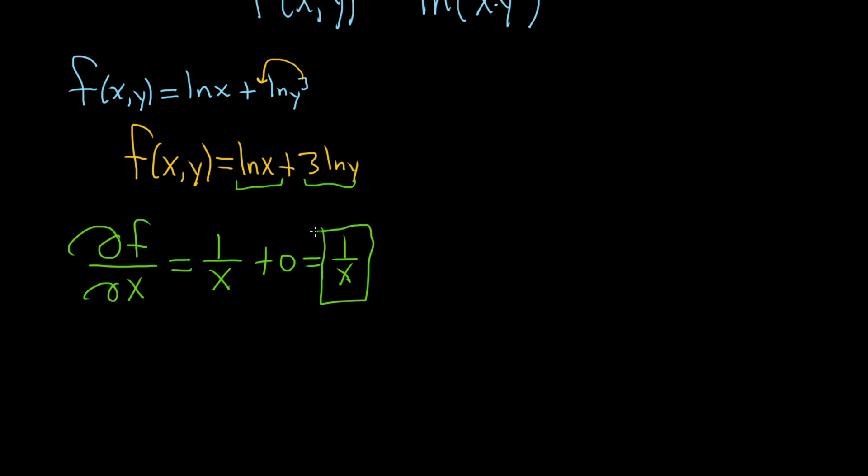Let's do the partial of f with respect to y. So in this case, all of the x's are constants. So when we take the derivative of the natural log of x, that's going to be 0 plus, and now this derivative here, ln y,